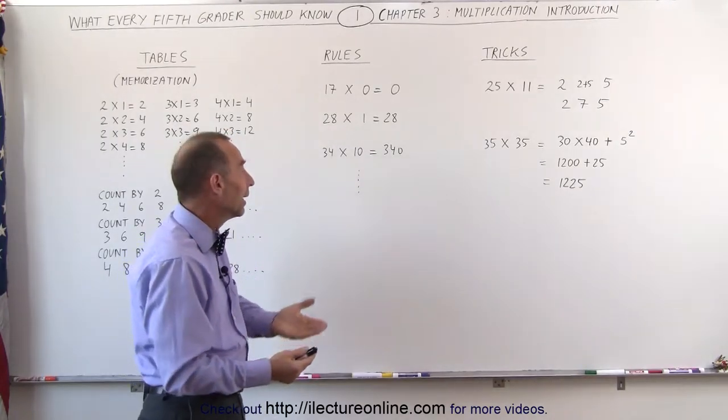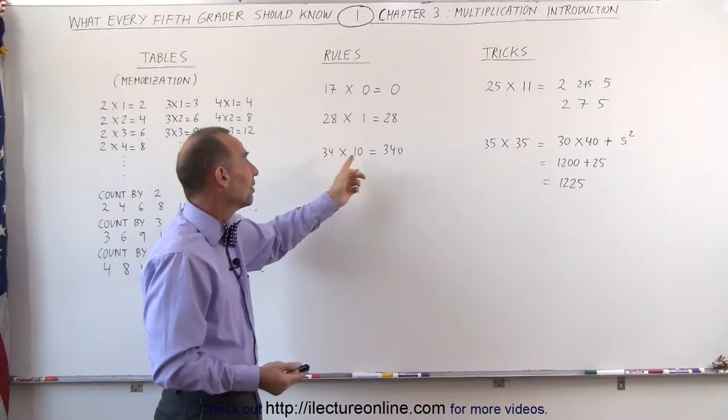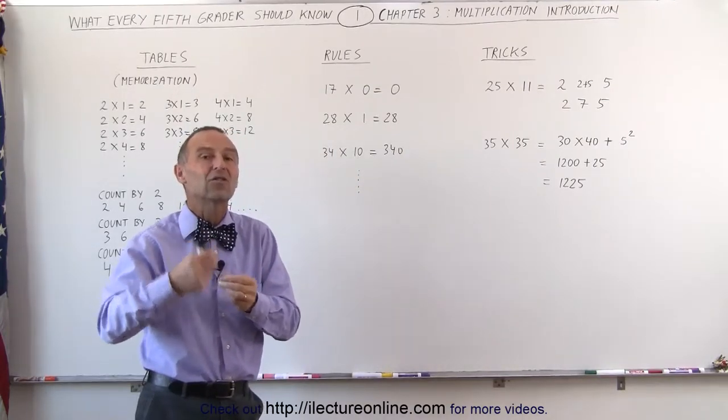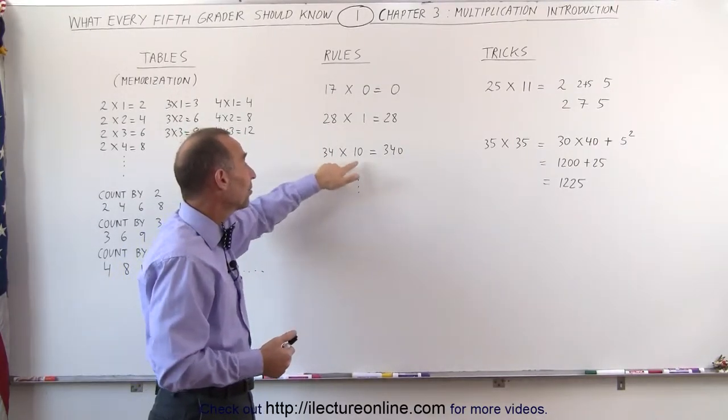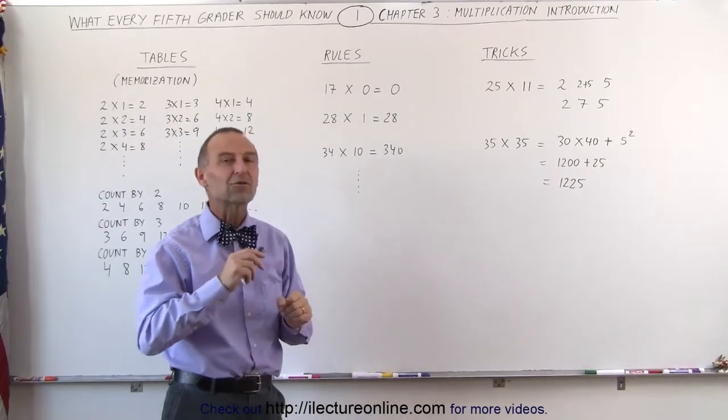And when you multiply times 10, you simply move the decimal place over or simply add a 0 to the number. 34 times 10 is 340. And then there's all kinds of tricks.